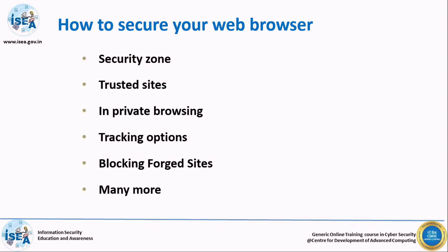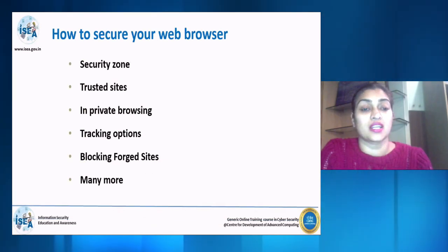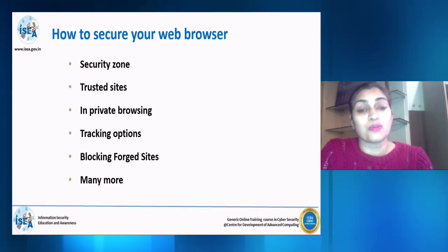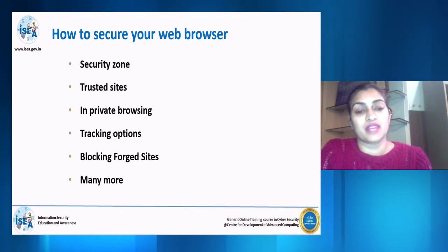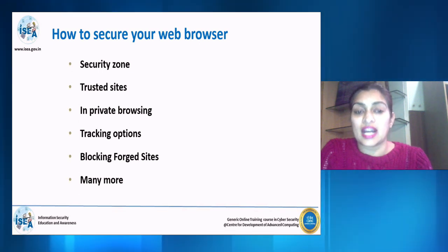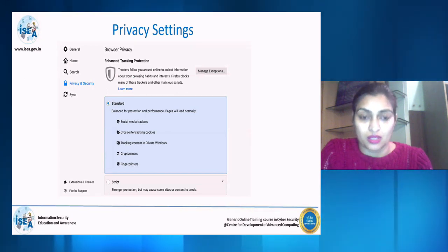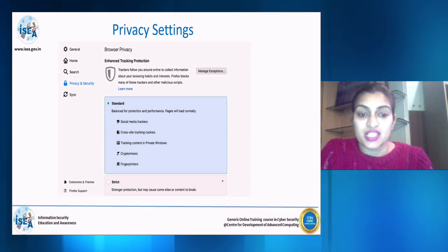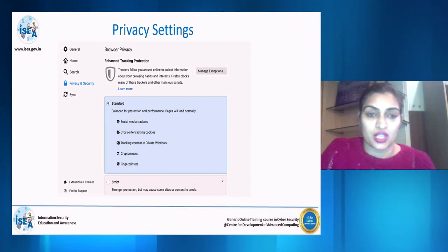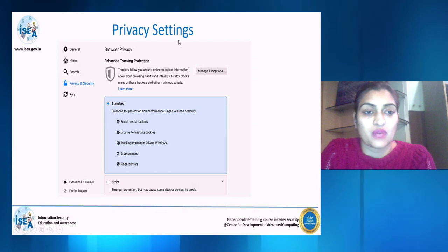Another way to secure your browser is to establish security zones — go only to trusted websites. Also important is private browsing. To add privacy settings, go to your browser's privacy settings. You can choose enhanced tracking protection — standard or strict, which provides stronger protection. Configure your settings accordingly.